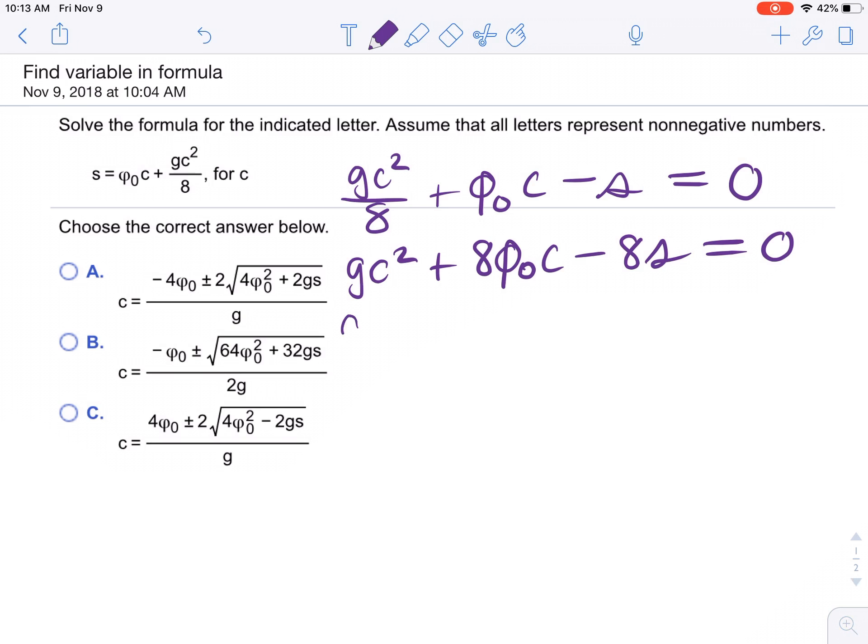Let's write that out: a equals g, b equals 8v sub 0, and c equals negative 8s.